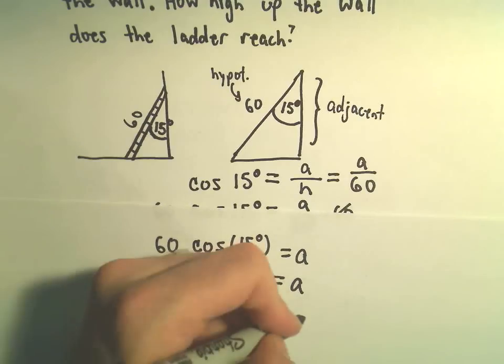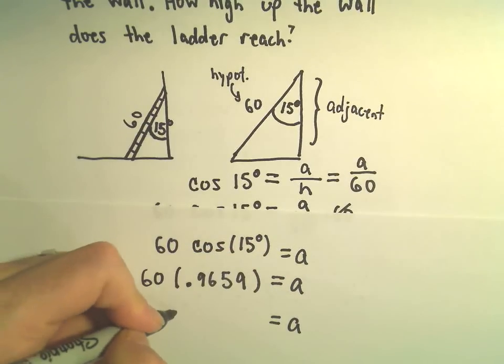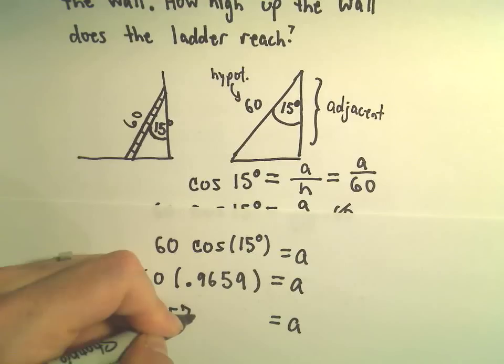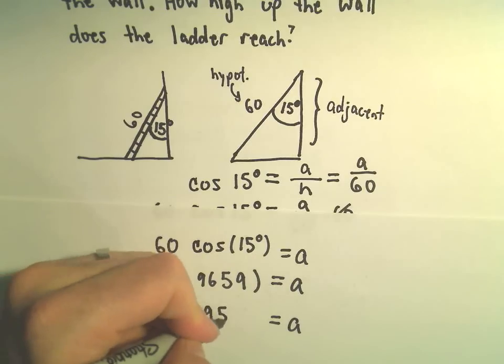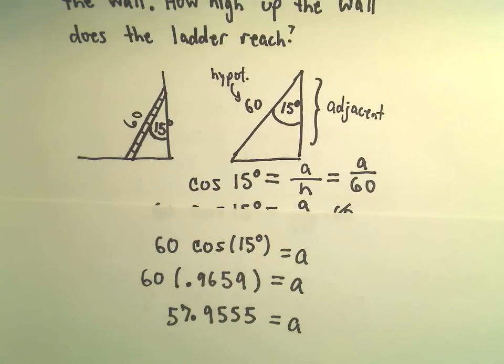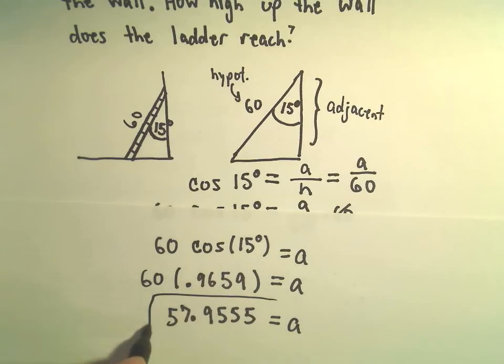So I'm getting that the adjacent side is equal to 57.9555 when I round off.